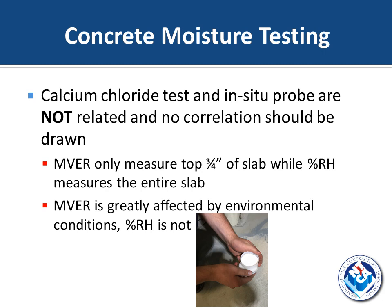The calcium chloride test and the in-situ probe test are not related, and no correlation should be drawn between them. The moisture vapor emission rate test only looks at the top three-quarters of an inch of the slab, while the percent RH looks at the whole slab — so you're getting two different pictures and cannot correlate the two. The MVER is greatly affected by environmental conditions, while the percent RH in-situ probe is not. We tested our own warehouse slab — about 20 years old — and ran the calcium chloride test first, getting about six pounds per thousand square feet per 24 hours, which for most installations is relatively low.